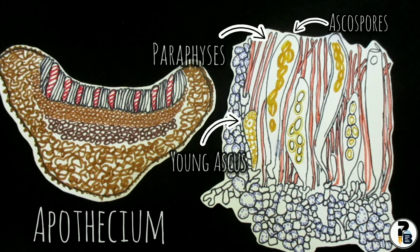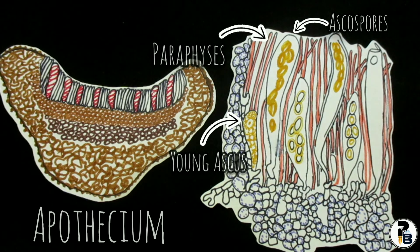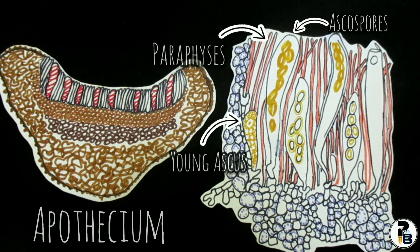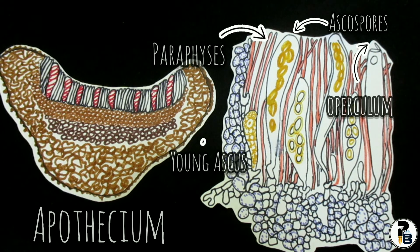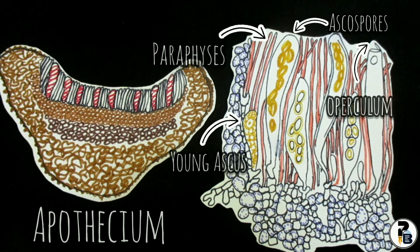Ascospores are multiserially arranged within the ascus. Paraphyses are slender and generally adhere together. Mature ascospores are dark colored, elliptical or sub-globose, either smooth or becoming sculptured. The ascospores are liberated through the apex of the asci in large numbers under moist conditions. These spores are scattered by wind over considerable distances. On falling upon a suitable substratum, each germinates by putting forth a germ tube and develops into a new hypha.